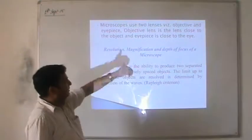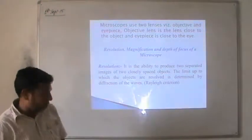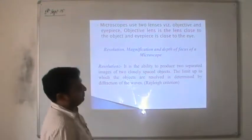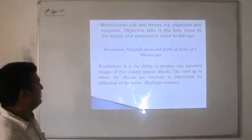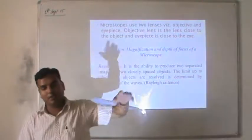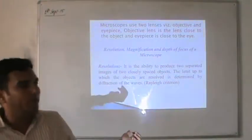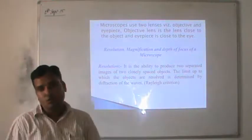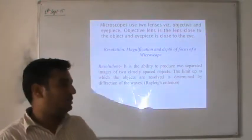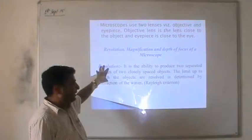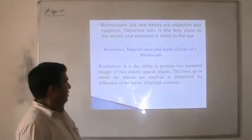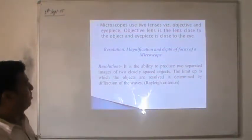There are a few important terms to understand before looking at any type of electron microscope or characterization device: resolution, magnification, and depth of focus of a microscope. These are important in the microscopic world for techniques used to characterize smaller particles. The first one is resolution. Resolution is defined for each and every type of instrument. It is the ability to produce two separated images of two closely spaced objects. The limit at which objects are resolved is determined by the diffraction of waves.